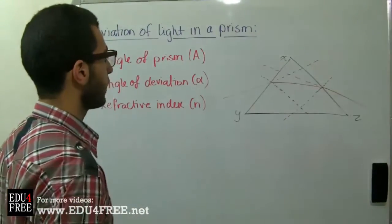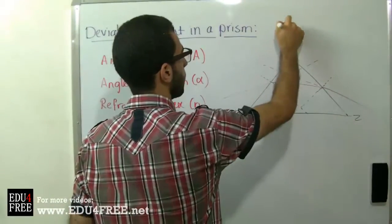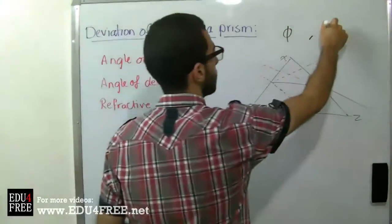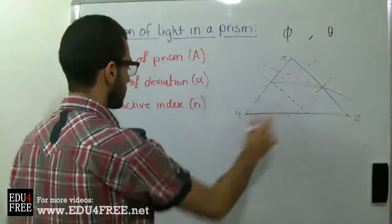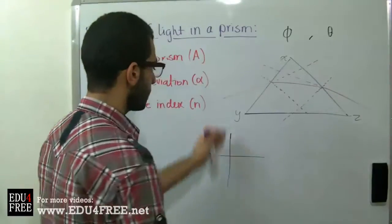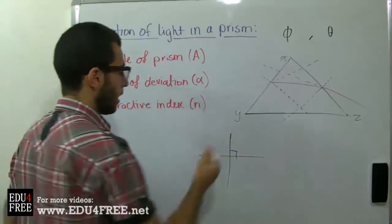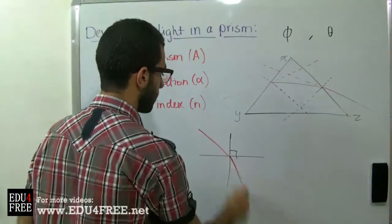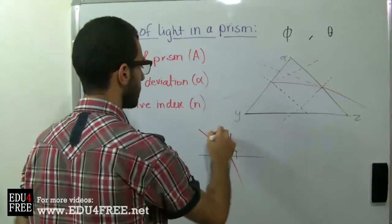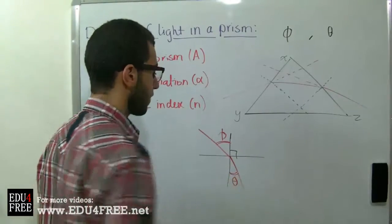We refer to the angle of incidence by phi and the angle of refraction by theta. If light falls on a surface, the normal to the surface makes a right angle with it. The angle between the incoming ray and the normal is the angle of incidence, and the angle between the refracted ray and the normal is the angle of refraction.